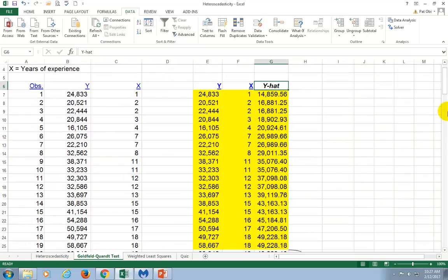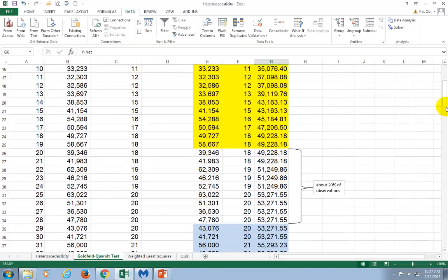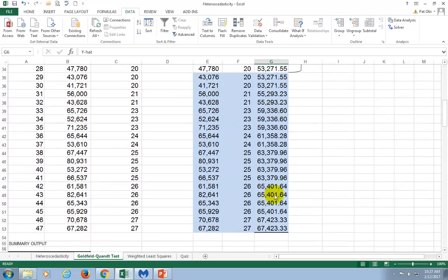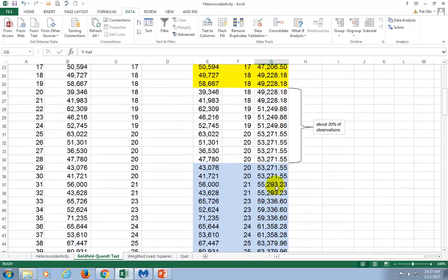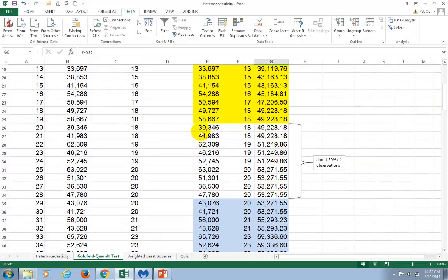And then I divided my output into subsamples, as you can see, the yellow subsample, which is about 22 observations. And then the light blue subsample, which has about the same number of observations after leaving out approximately one-fifth of the middle observation.